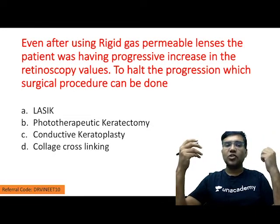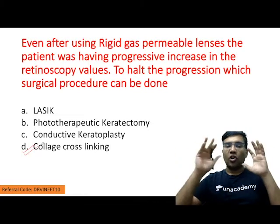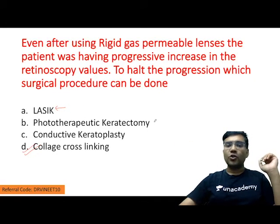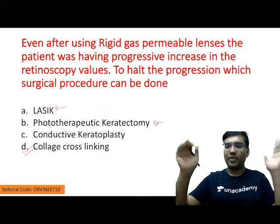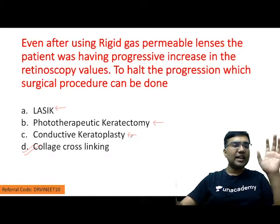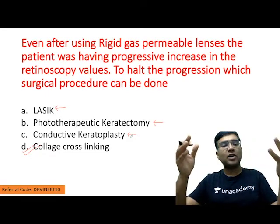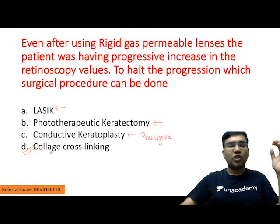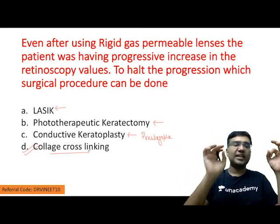The answer here is collagen cross-linking. LASIK is done to reduce refractive error. Phototherapeutic keratectomy is used to remove superficial corneal opacity. Conductive keratoplasty is not a keratoplasty — it is done to remove a small degree of presbyopia or hypermetropia. Collagen cross-linking is the procedure used to reduce or stop the progression of keratoconus.